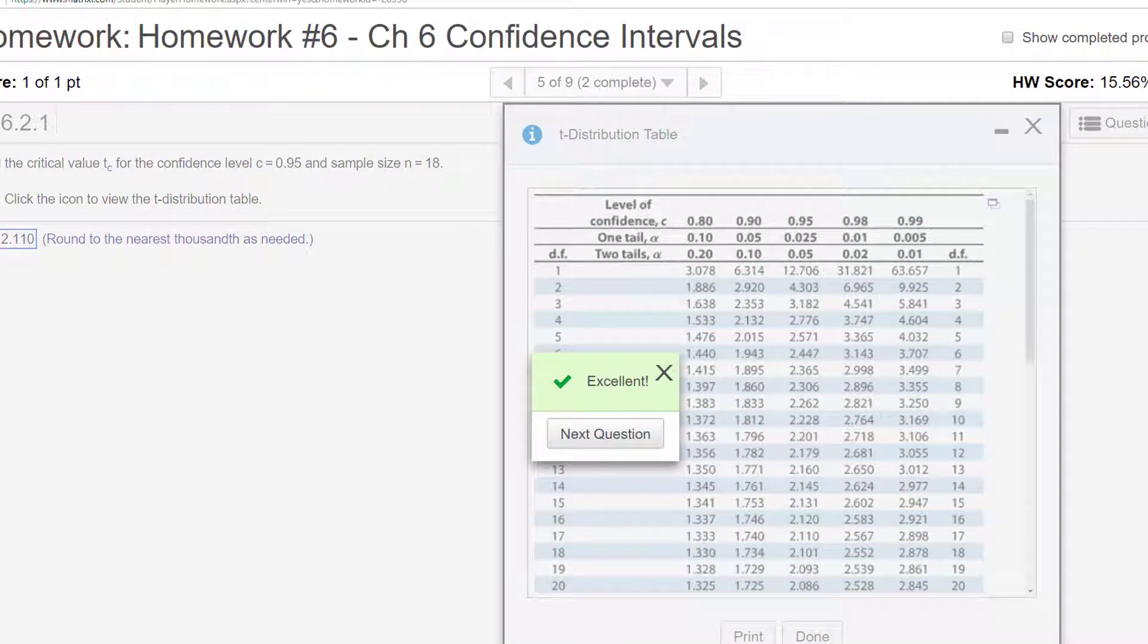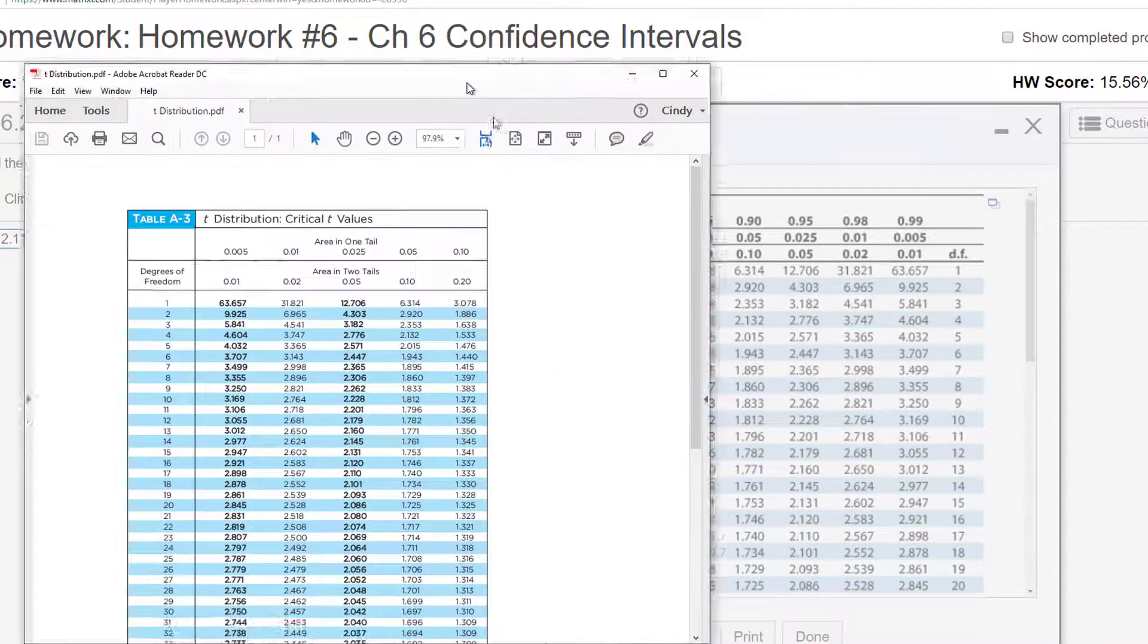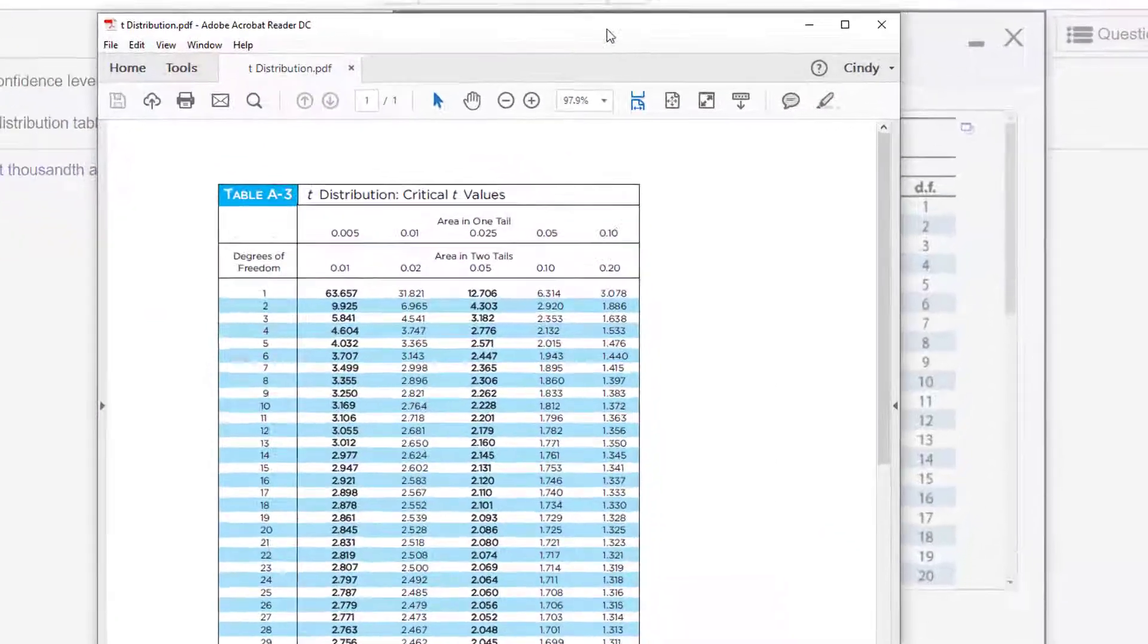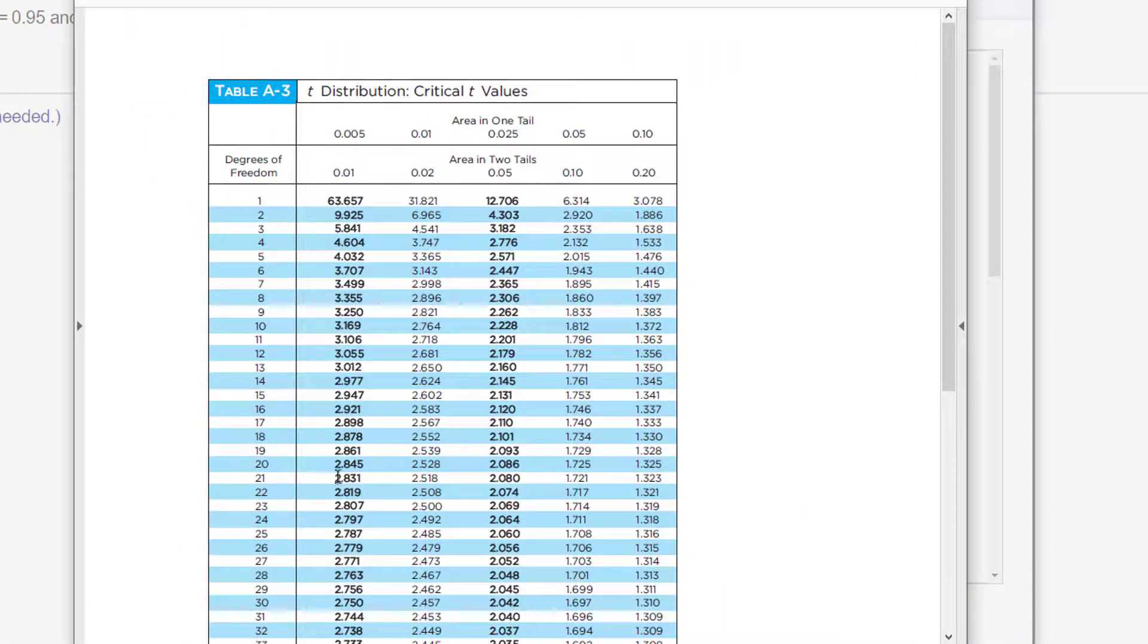If you see an actual table, sometimes they don't have that level of confidence, but that's okay because if it's a confidence interval that we're interested in, that would be area in the two tails.